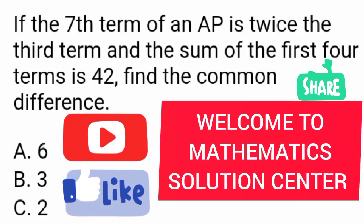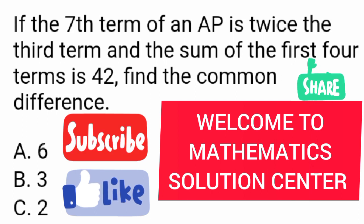Good day once again everyone and welcome to Mathematics Solution Center. Today we are looking at a question that says if the seventh term of an AP is twice the third term and the sum of the first four terms is 42, find the common difference.